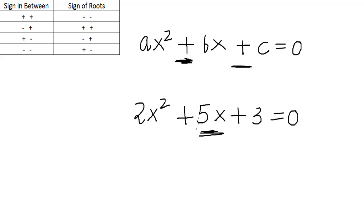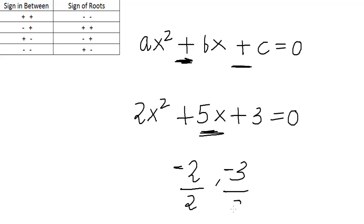The factors of 6 which give a sum of 5 are 2 and 3. Now since the sign in between is plus-plus, the sign of our roots will be minus-minus. So we have minus 2 and minus 3, and the last step is to divide by the coefficient of x squared, which is 2. So our final roots will be minus 1 and minus 3 by 2.